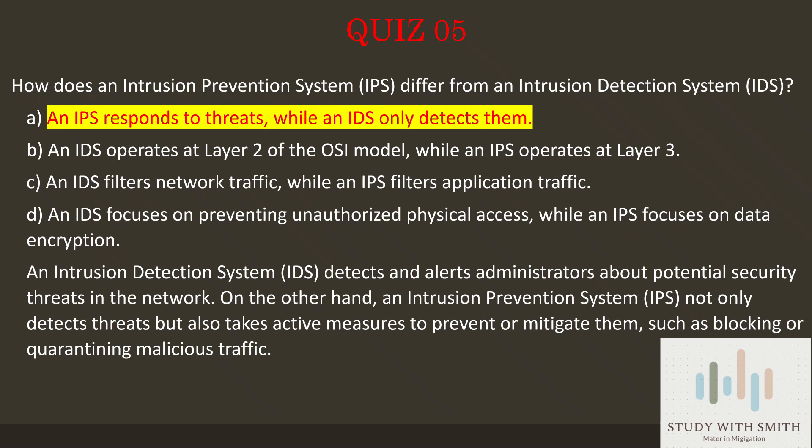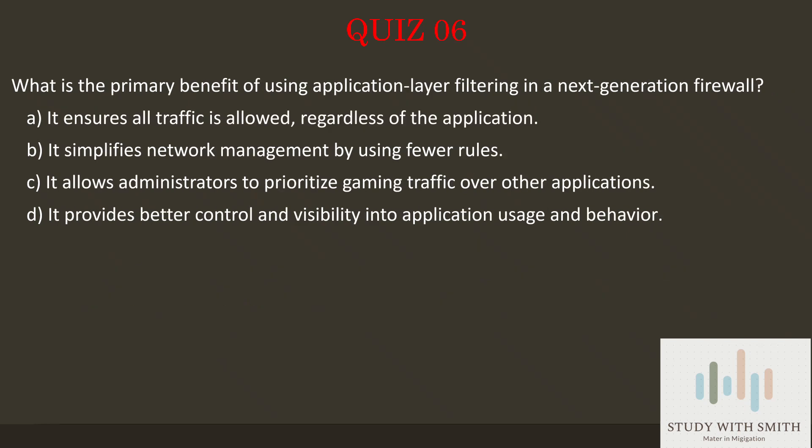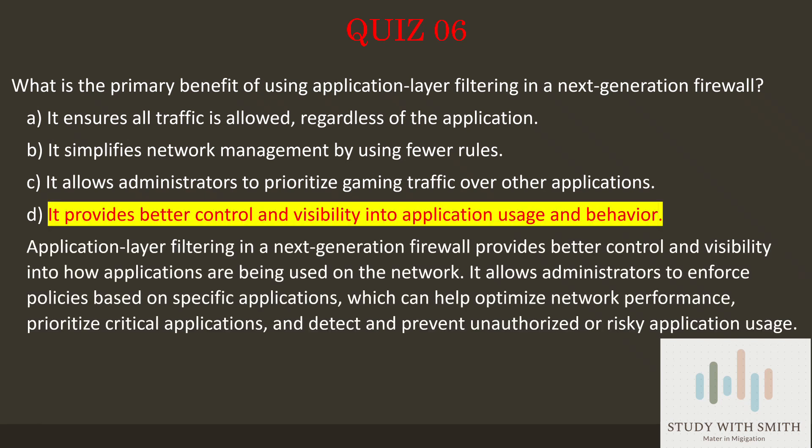Let's go to question 6. What is the primary benefit of using application layer filtering in a next-generation firewall? Pause the video now to select the best answer. The answer is D: it provides better control and visibility into application usage and behavior.